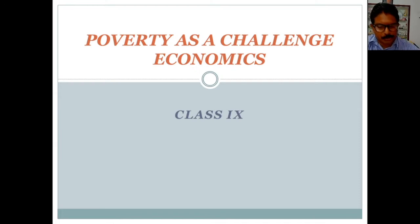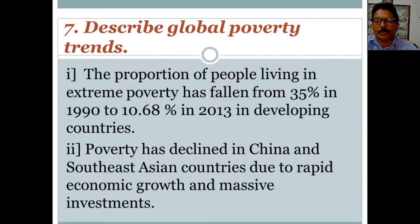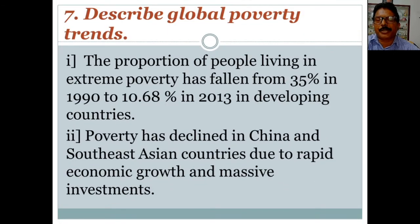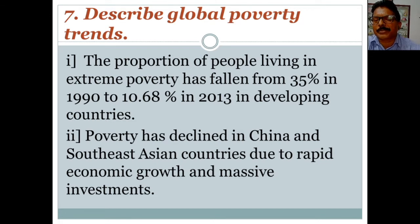Now let us move to the next question: what is the global scenario? Let us find out the global poverty trends. For example, in America, if you have a car you may still be considered a poor person. But in India, if you own a car you are considered a rich person. So owning a car is not the criteria for poverty in America.